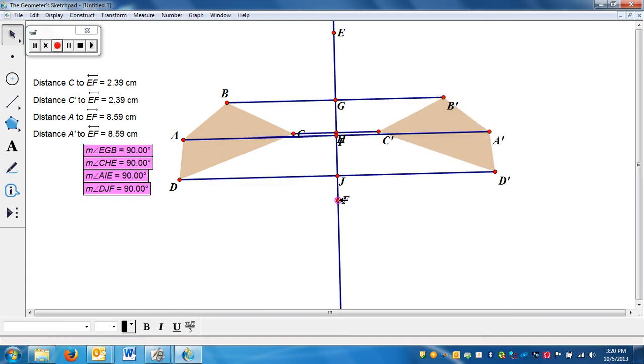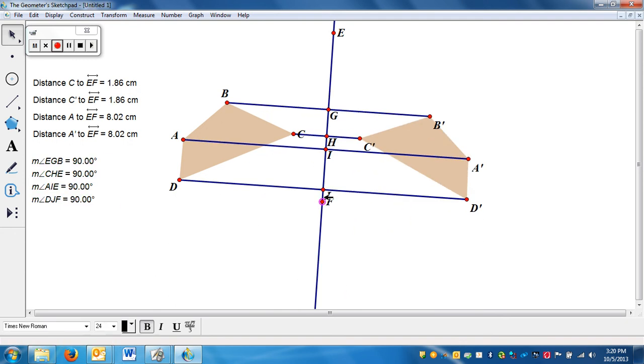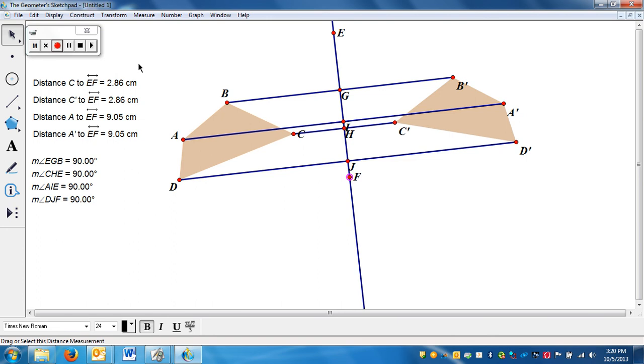Watch it kind of moves with me but they always stay 90, and again these distances always stay the same. I could have measured more. So again the two properties I wanted you to come up with: you always have to stay the same distance from the line and then you have to make sure you're 90 degrees.